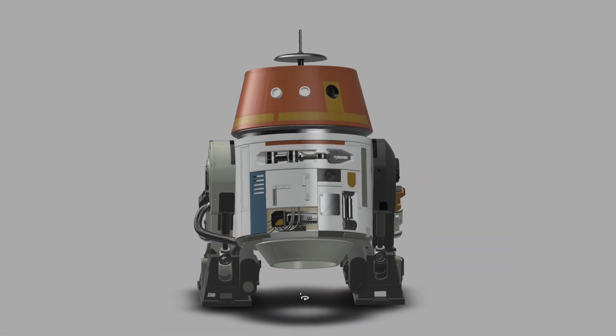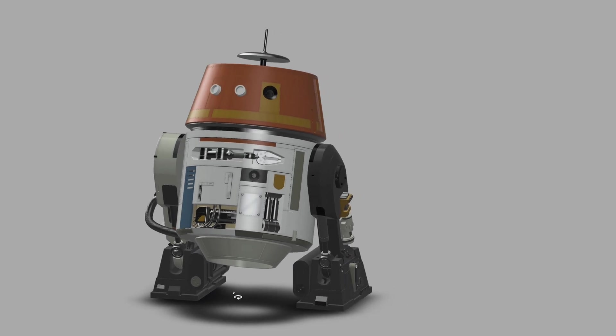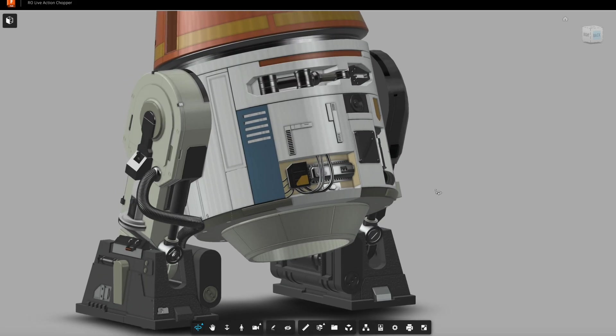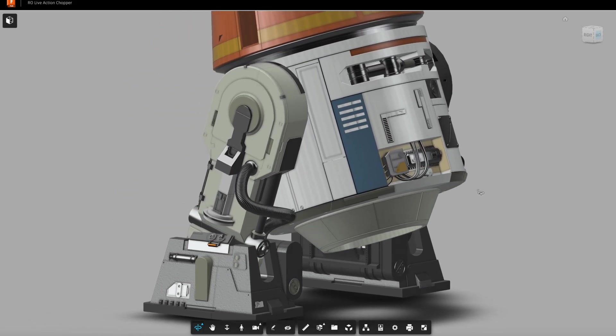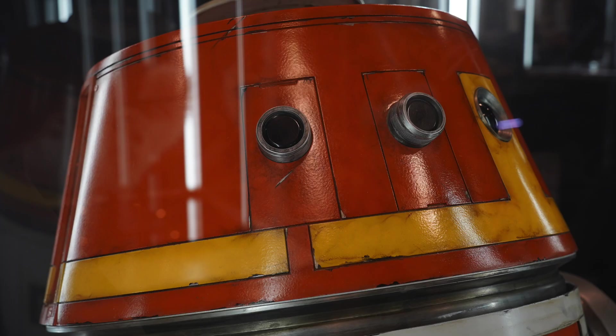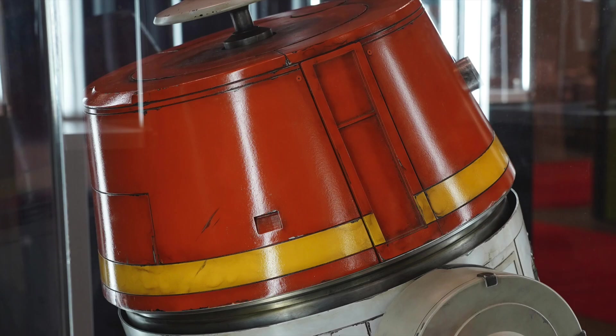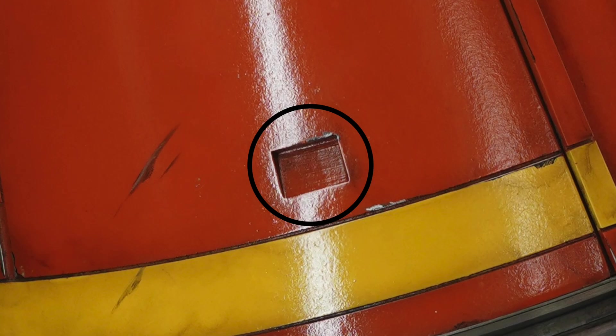I'll be using Mr. Badly's live action chopper files for my build. I always assumed I'd be making the Rebels version, but I really love the extra details on the live action one. I also had the chance to actually see the droid in person and take a bunch of reference pictures of it, which means if I want to replicate it down to the seemingly visible layer line still on the dome, I can.